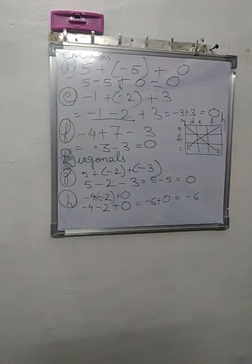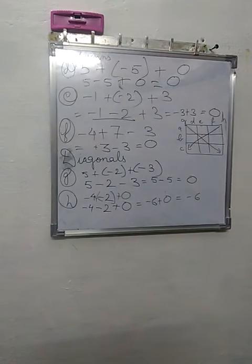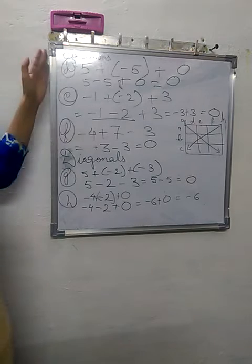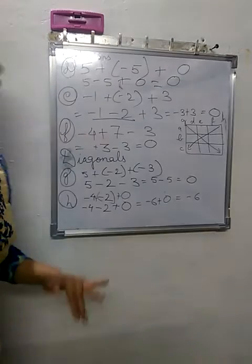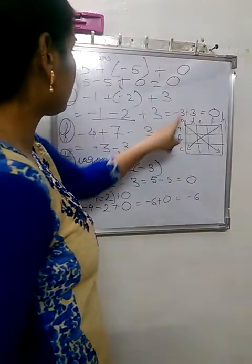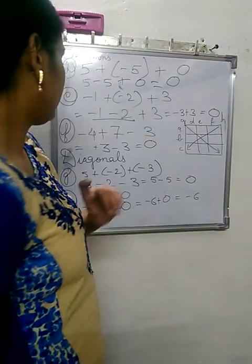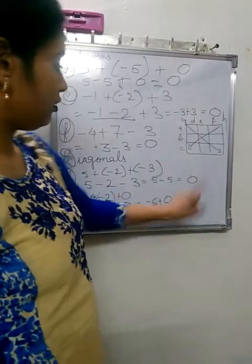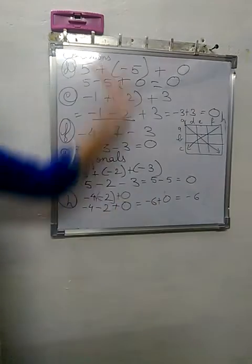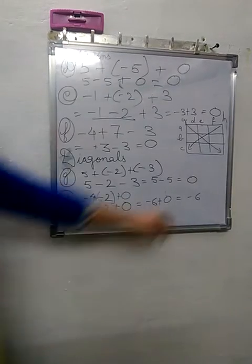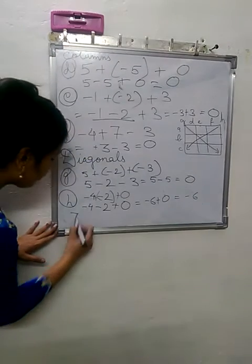Now the question says, if a square is magic, then its each row and column as well as diagonals will have the same sum. But we see the answers are not matching. Yes, here it is minus 6, rest everywhere you can see it's 0. But here it is minus 6. So this is not a magic square.